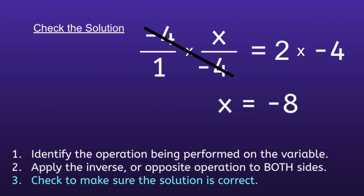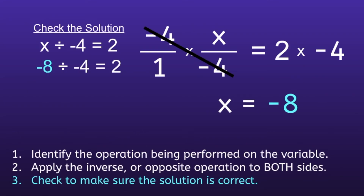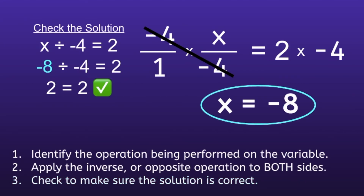Moving on to Step 3: check the solution. We rewrite the equation — x divided by negative 4 equals 2 — then replace x with negative 8. Negative 8 divided by negative 4 equals 2, and 2 is equal to 2. Both sides are equal, which confirms our solution is correct. So x is equal to negative 8.